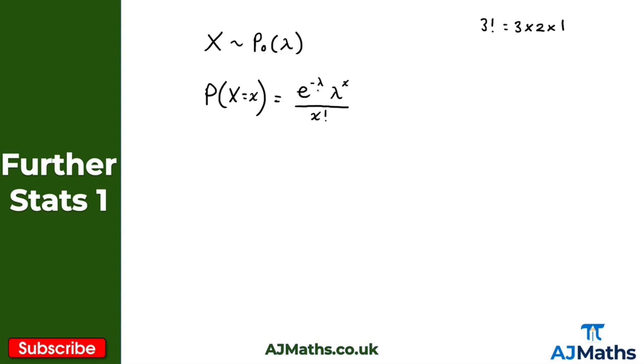e to the minus lambda times by lambda to the x, so again e is just the irrational number e, again you should be familiar with from A-level maths, and lambda again is this value given in our Poisson distribution.